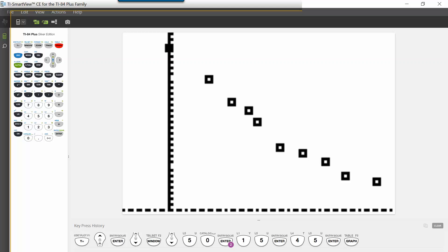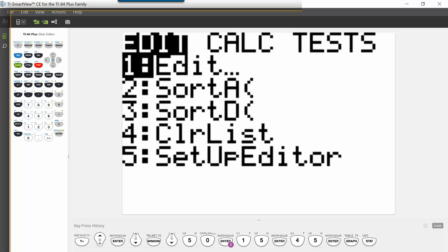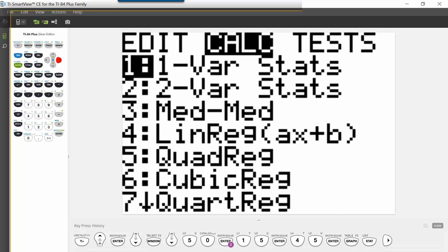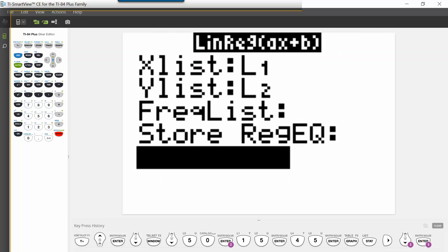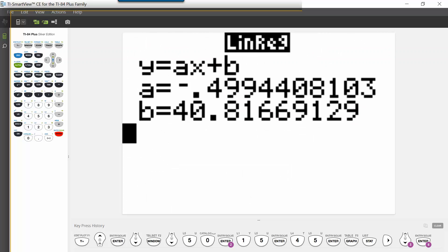So we are going to again go back into stat, this time arrow right to the calculate functions, and we want to choose the one that looks like our linear regression, that linreg. And we're just going to continue to hit enter until we get that regression, and you should get something that looks like this.